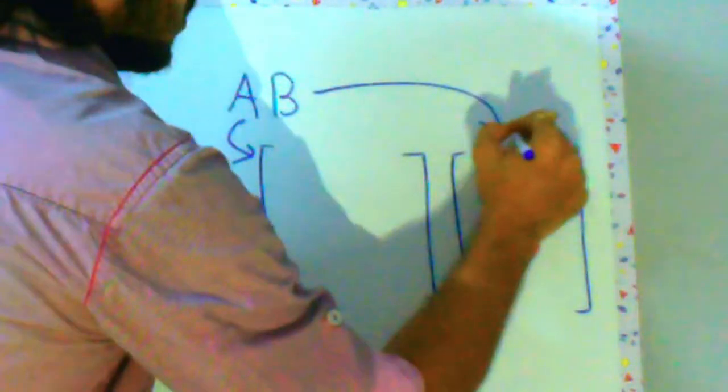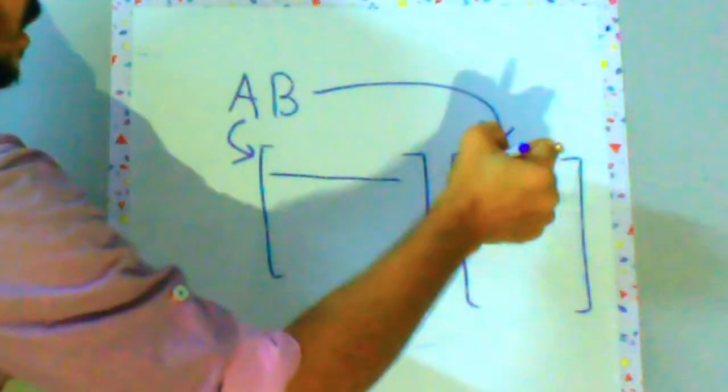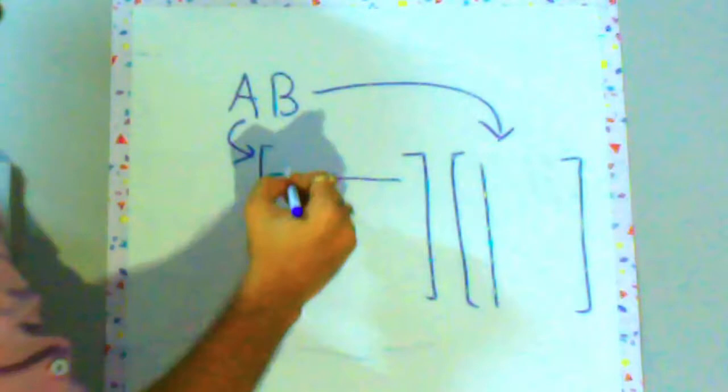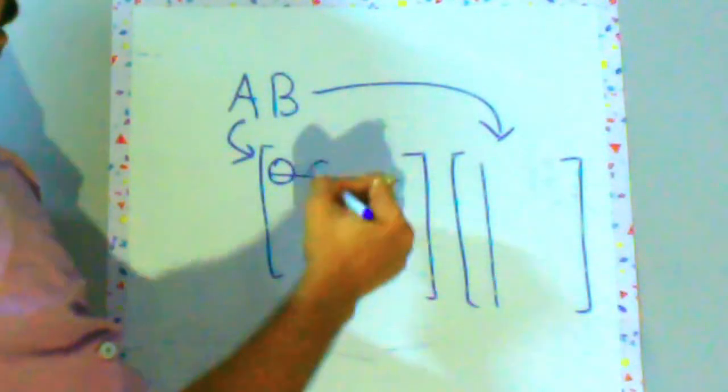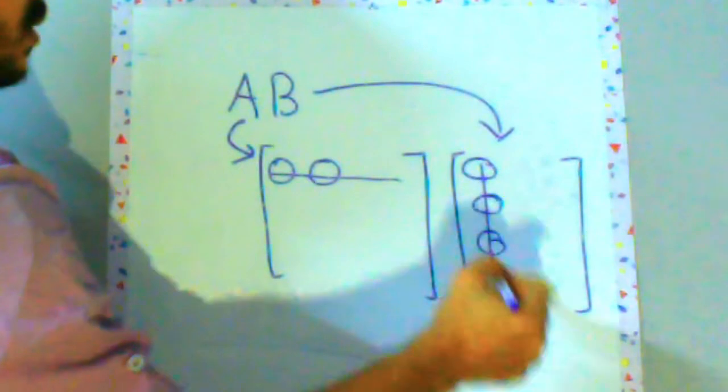what you do is you take rows and columns. So you take all the values here and multiply this with the corresponding values from here.